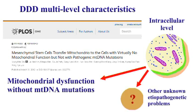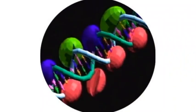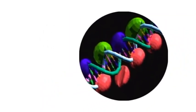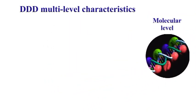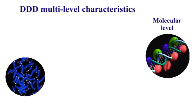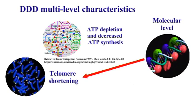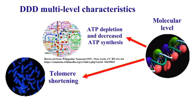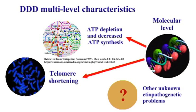Furthermore, molecular level changes modify the intracellular level. Molecular level changes such as ATP depletion and telomere shortening may be affected by potential mind level changes, which are invisible and can only be inferred.